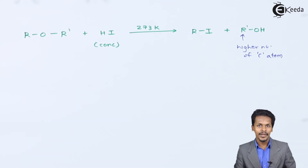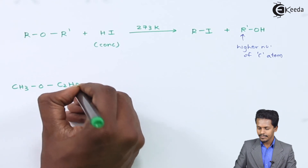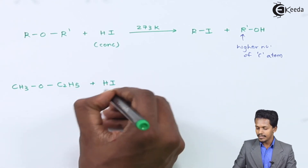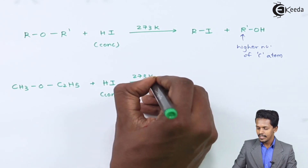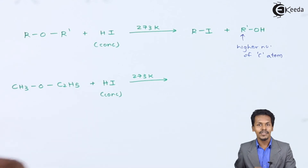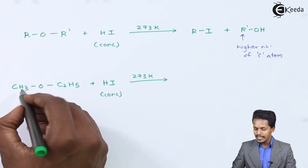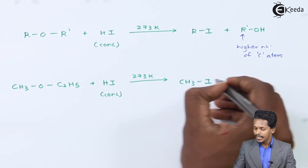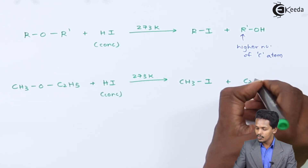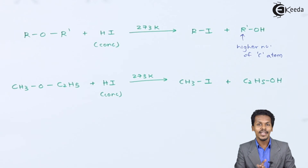For example, CH₃OC₂H₅ treated with concentrated HI at low temperature (273 Kelvin): CH₃ has fewer carbon atoms than C₂H₅, so CH₃ is converted to CH₃I (methyl iodide), while C₂H₅ becomes C₂H₅OH (ethanol). This completes the discussion on the action of HI on ether.